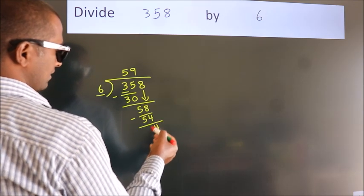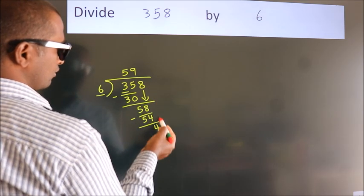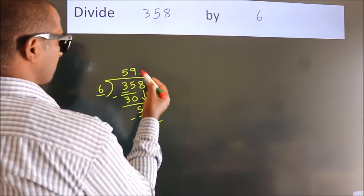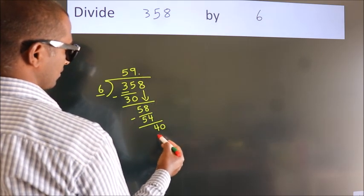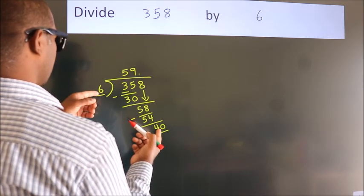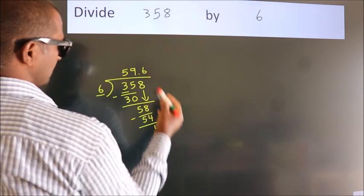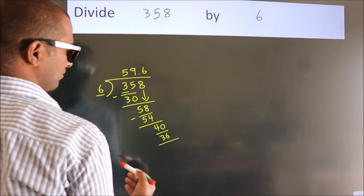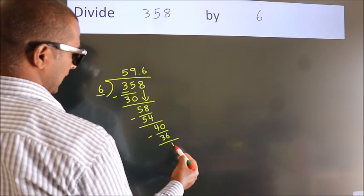After this, there are no more numbers to bring down. So what we do is put a dot and take 0 to get 40. A number close to 40 in the 6 table is 6 sixes, which is 36. Now we subtract and get 4.